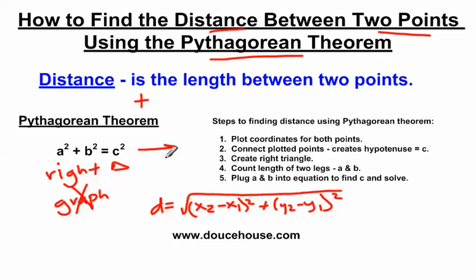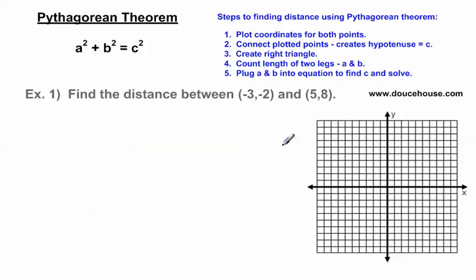We're going to follow these five steps, and if we follow these five steps we can find the distance between two points. Let's jump into the first example. It says find the distance between (-3, -2) and (5, 8). This is finding the distance using the Pythagorean Theorem.